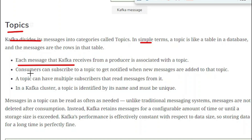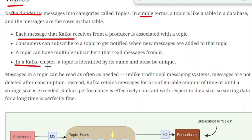There may be many topics in the Kafka broker. When a producer wants to send a message, it must specify the topic, and the message will be published to that topic. The consumer then subscribes to that particular topic to receive all its messages. One topic can have multiple subscribers — either a single consumer or multiple consumers can read the same messages. In a Kafka cluster, a topic is identified by its name and it must be unique.